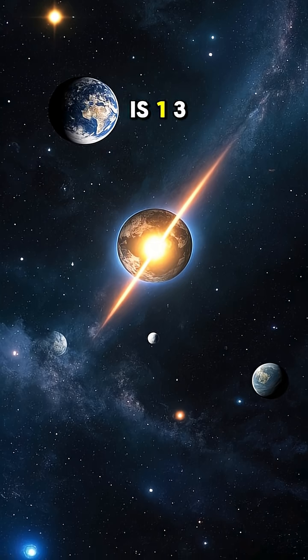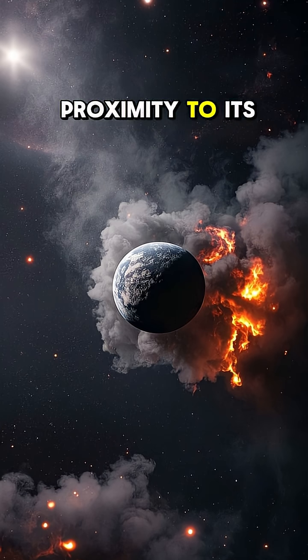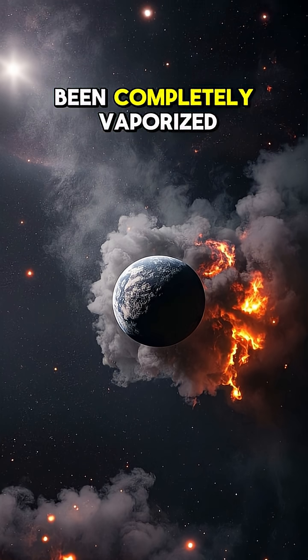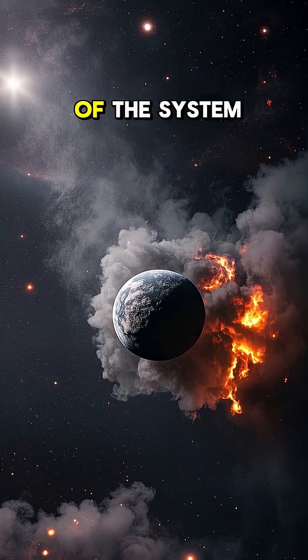Earth is about 150 million kilometers from the sun. This planet is one-third of that distance. At such close proximity to its star, it should have been completely vaporized during the formation of the system.